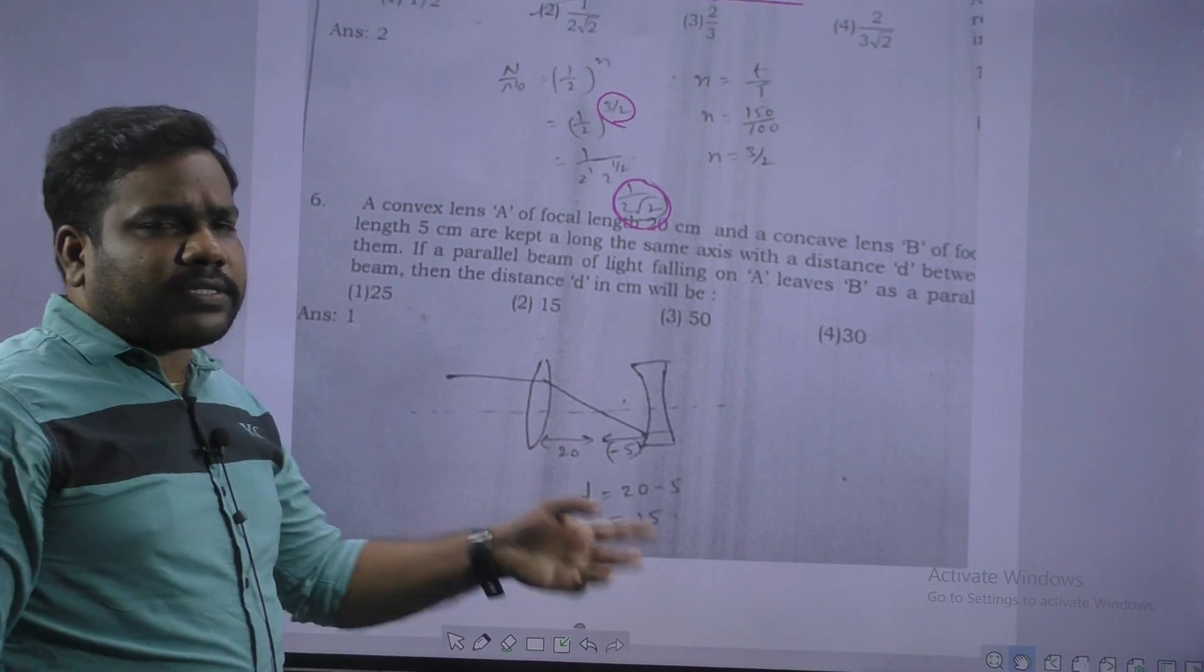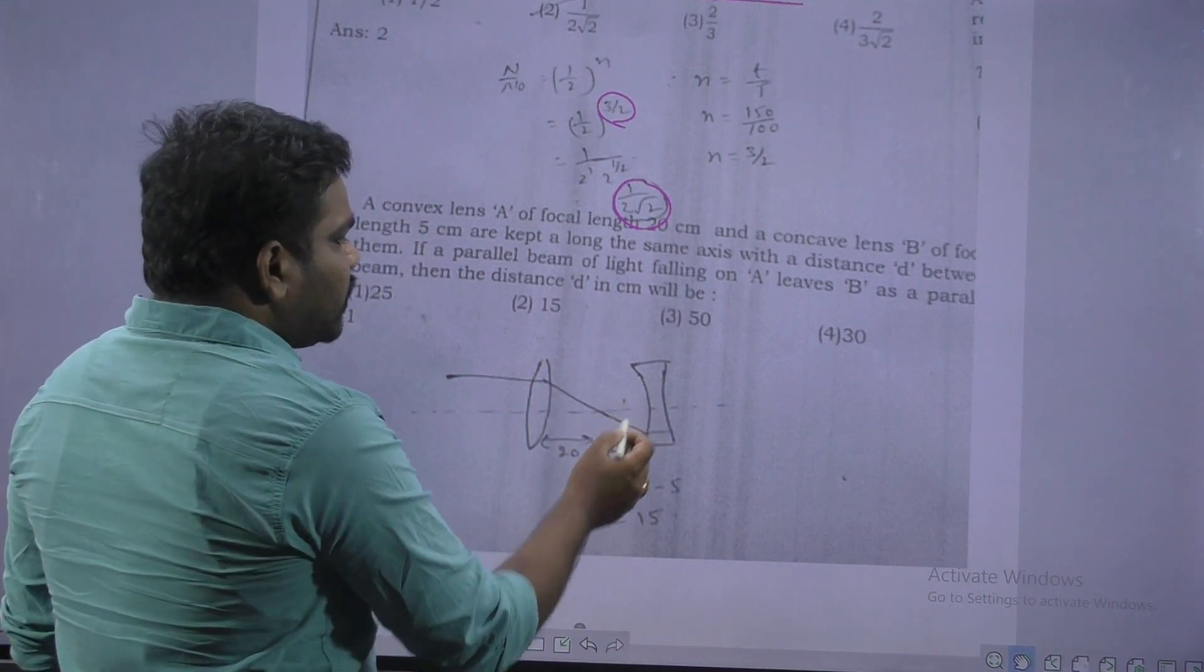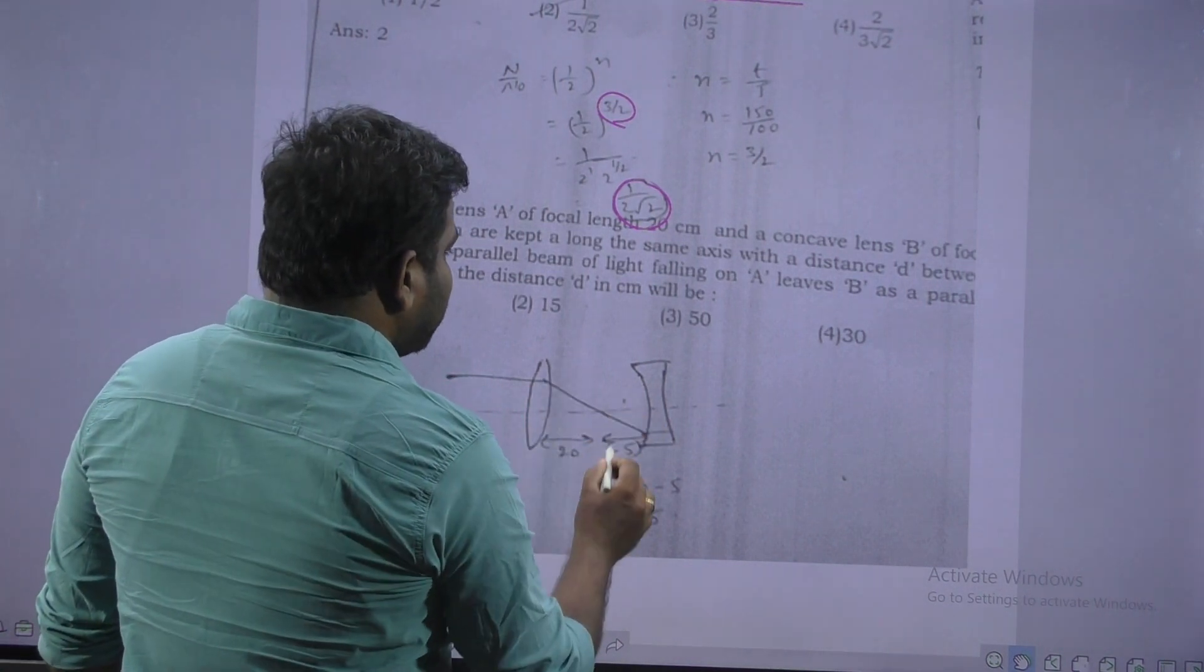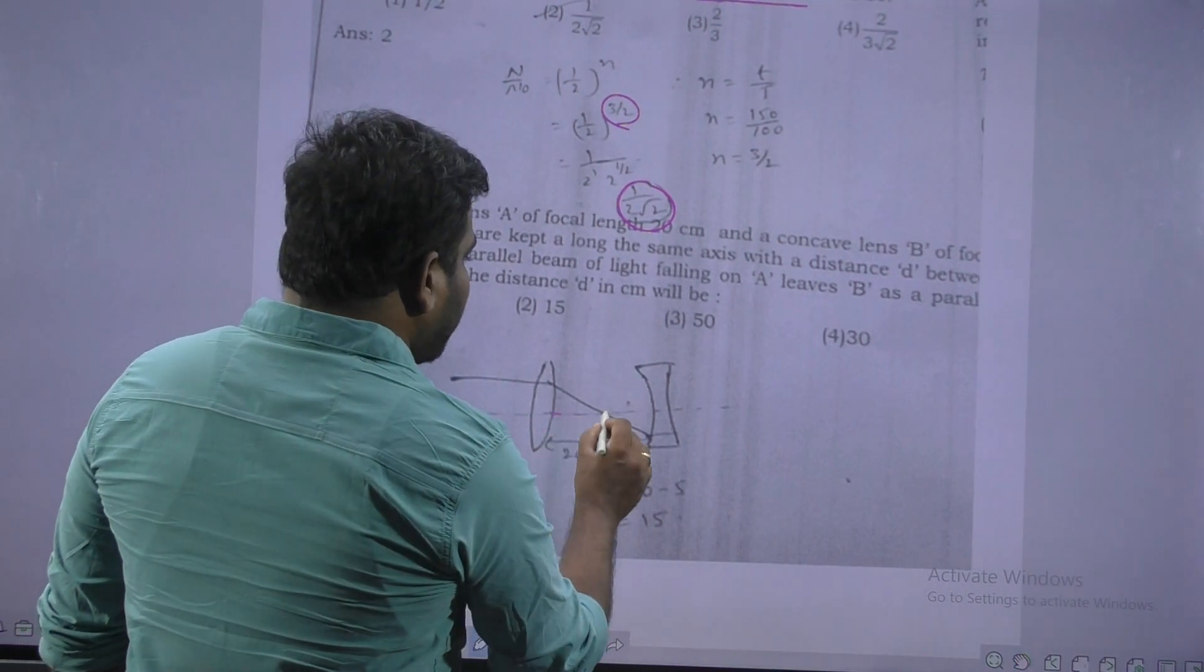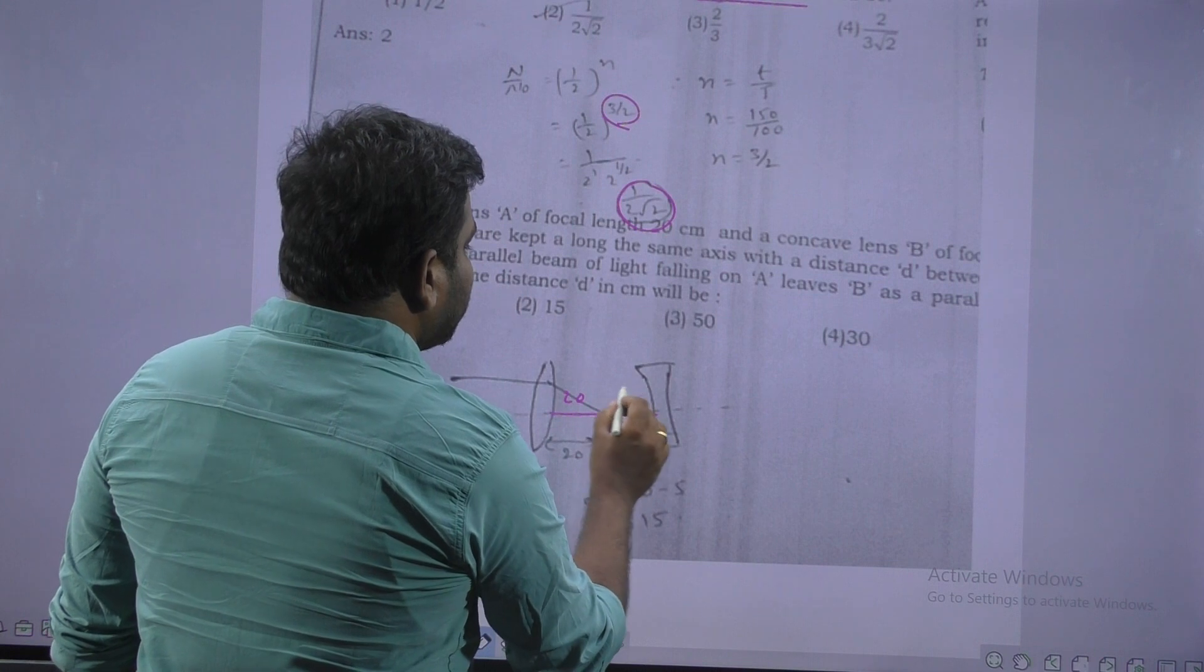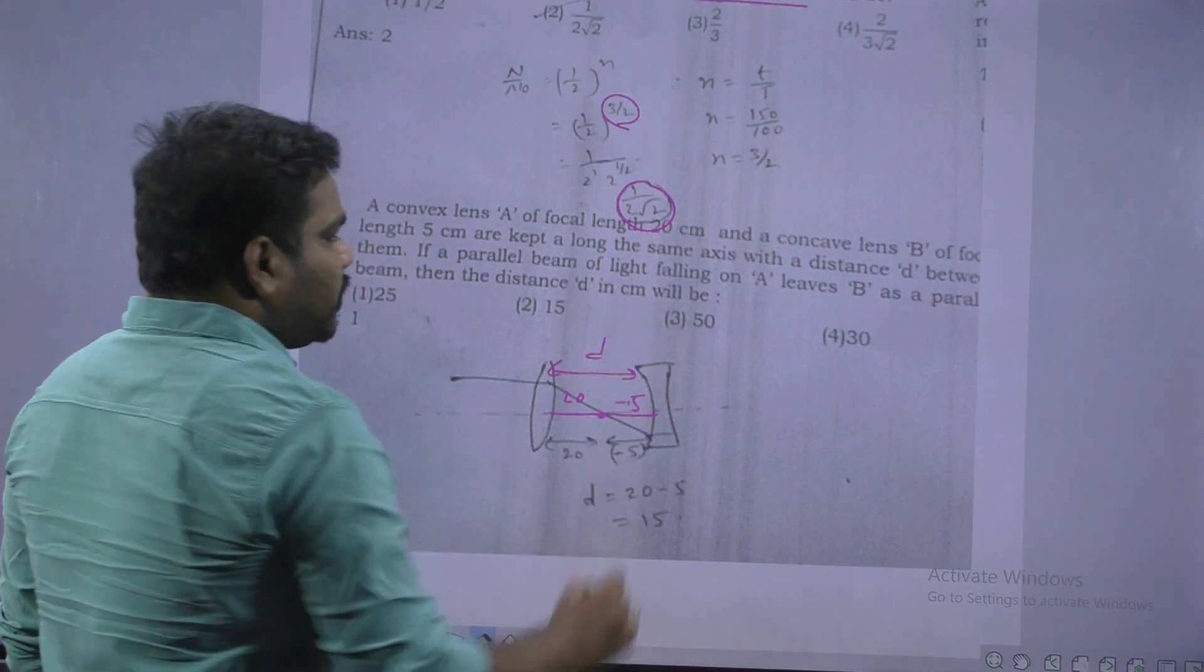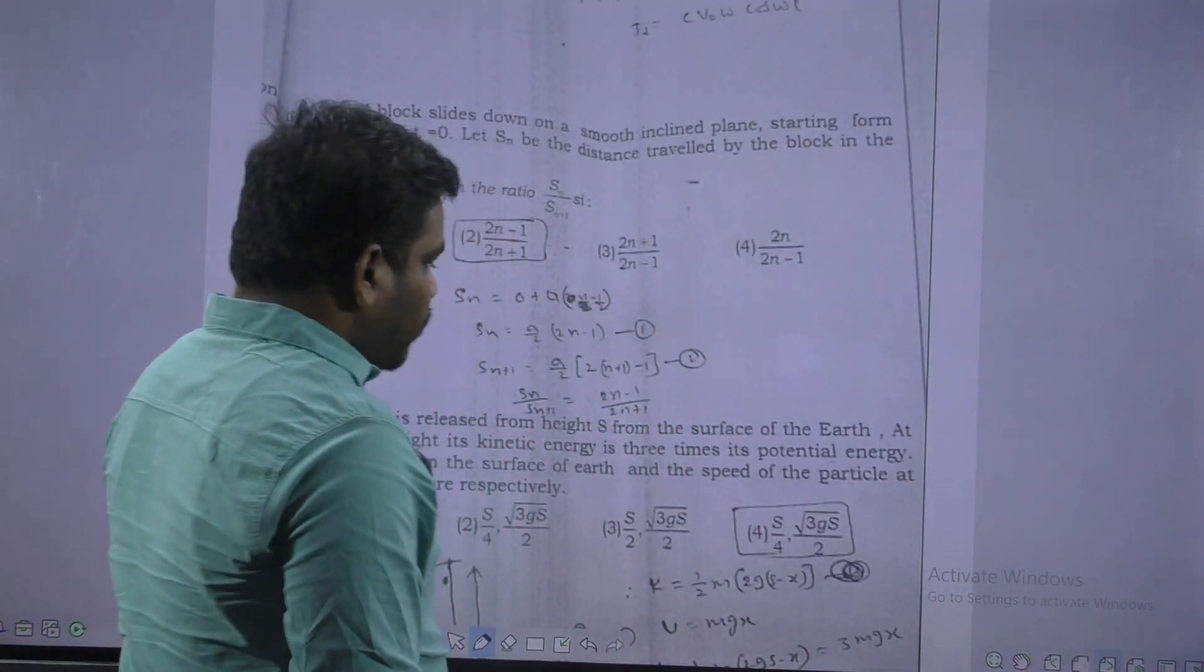Next question. This is convex lens, concave lens. Parallel incidence, parallel emergence. One is convex, other is concave. So convex lens focal length distance is 20, concave lens focal length is minus 5, then the distance d is equal to 15, 20 minus 5, 15.